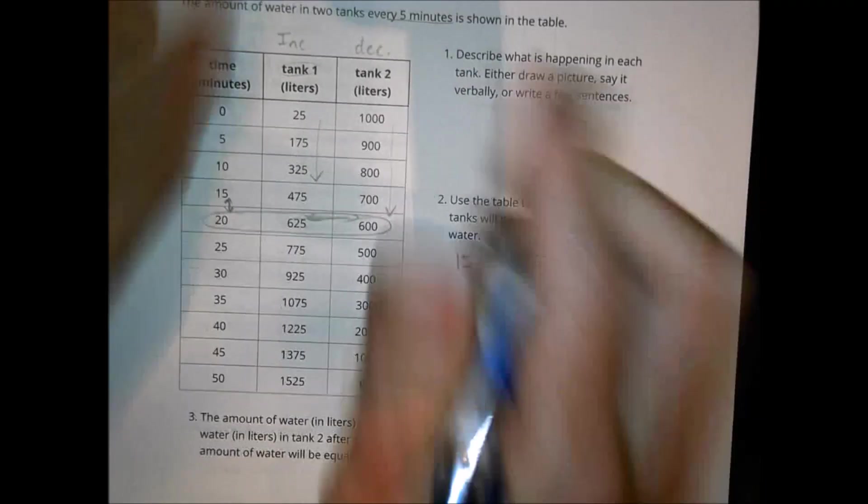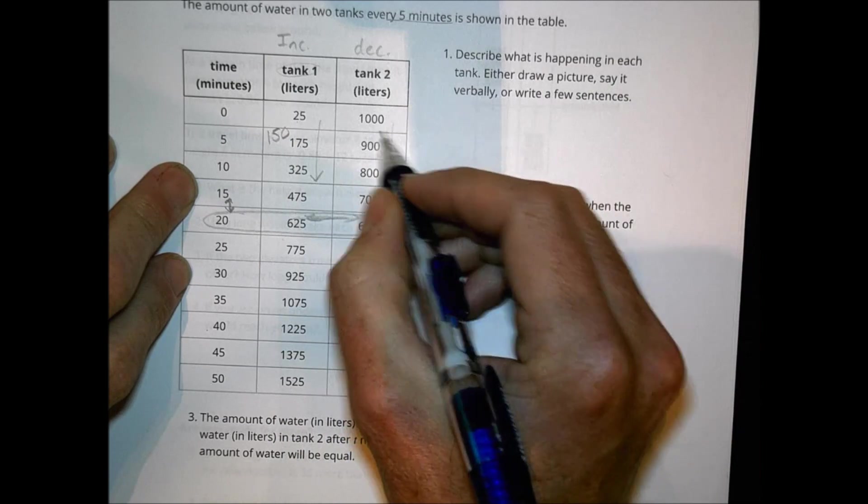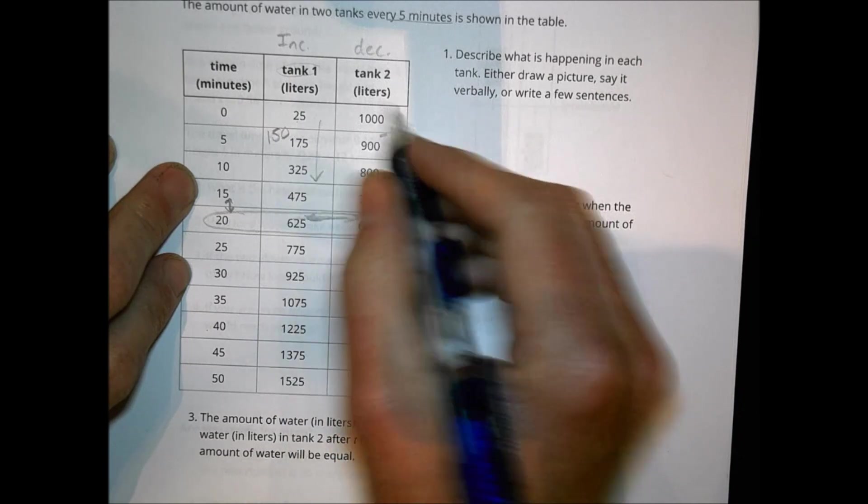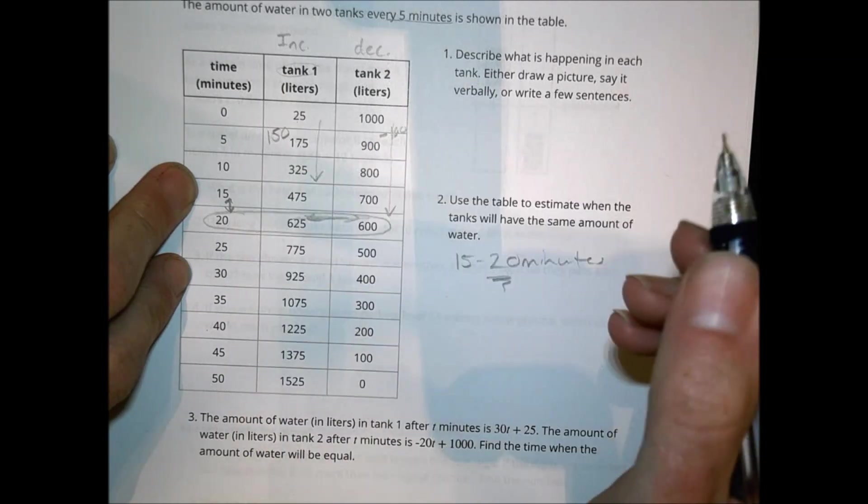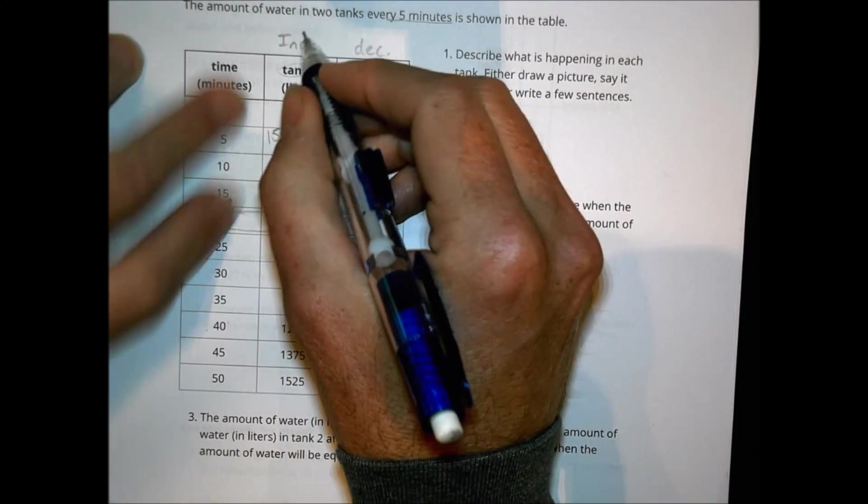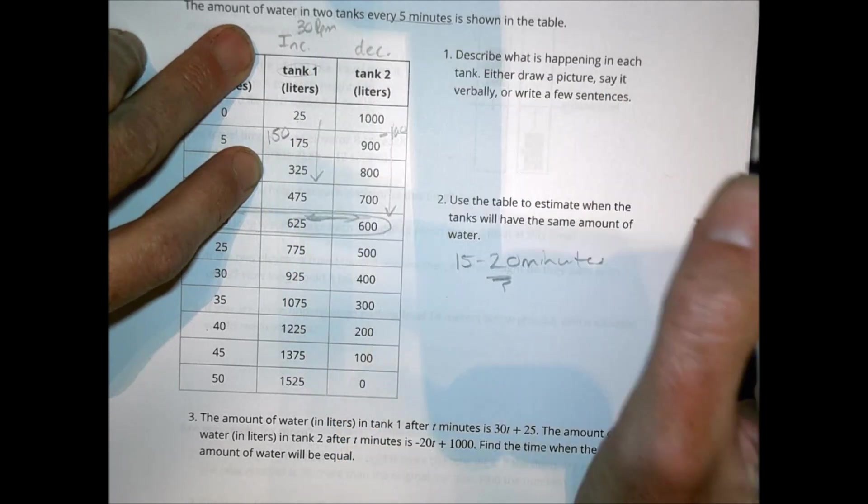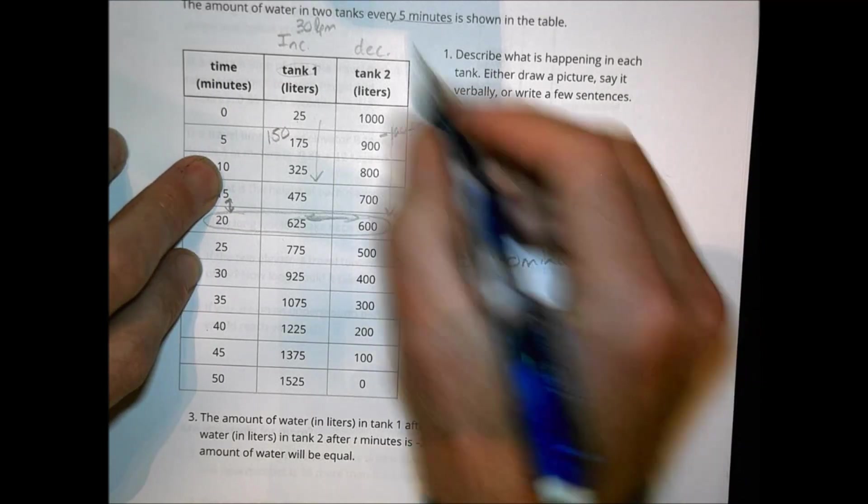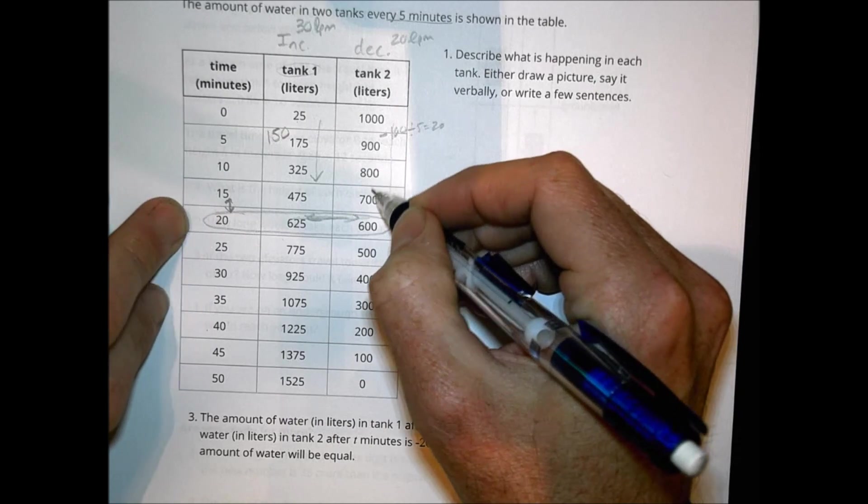A couple of things I noticed when I look at this here. To move from 25 to 175 is an increase of 150 and going here, we're decreasing by 100 liters. There's definitely an increase and a decrease of a certain amount. This is happening every 5 minutes. So if we divided 150 by 5, we'd come up with 30. So tank 1 seems to be increasing by about 30 liters per minute. Whereas this one here, we divide this by 5, 100 by 5, and we end up with 20, which means it's decreasing about 20 liters per minute. That's just looking at our numbers that are given in this table.